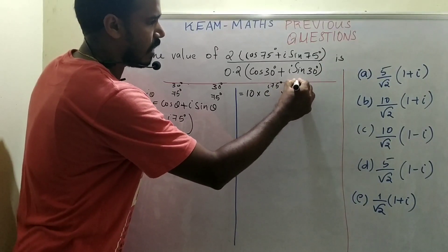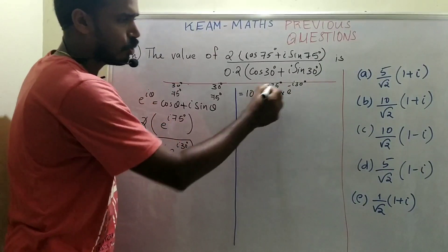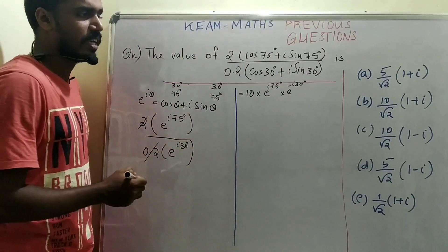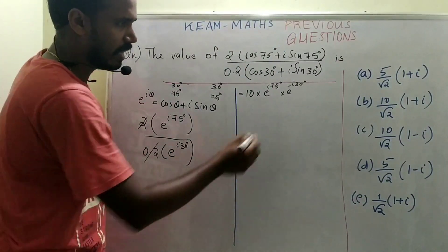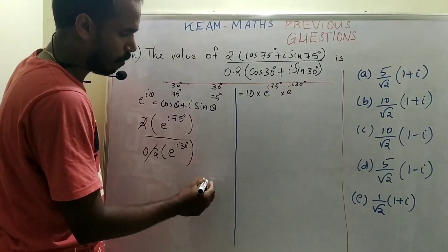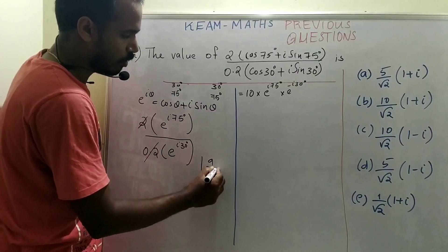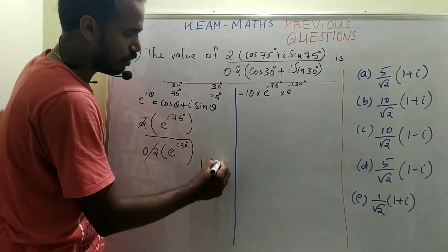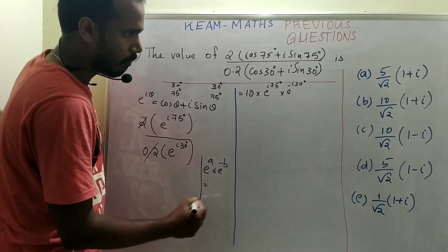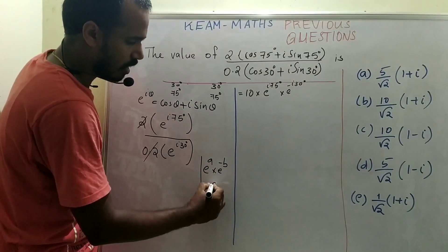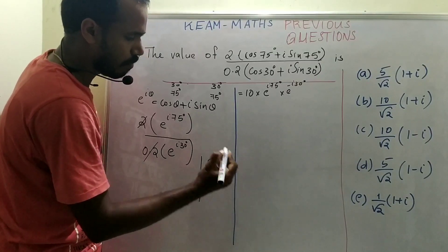This can be written as e^(i75°) multiplied by e^(-i30°), using the formula e^a · e^(-b) = e^(a-b).